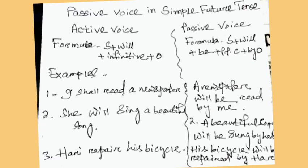For example, number one: 'I shall read a newspaper.' The passive will be: 'A newspaper will be written by me.' Similarly, example two: 'She will sing a beautiful song.' The passive will be: 'A beautiful song will be sung by her.'